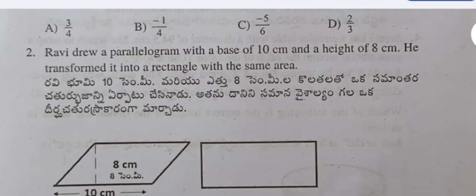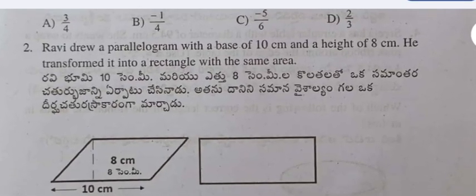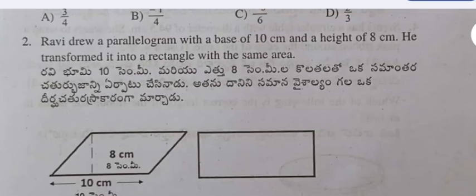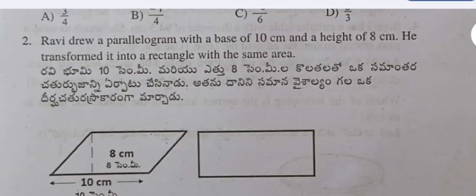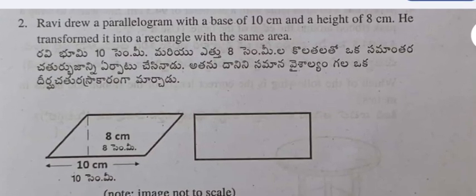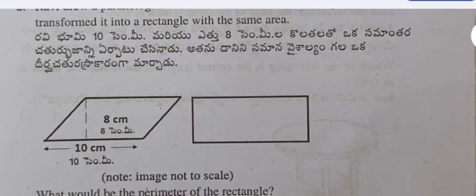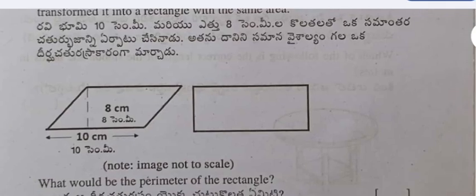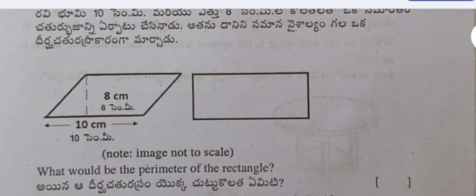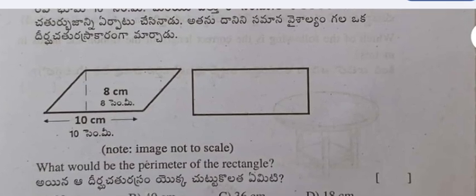Question 2: Ravi drew a parallelogram with a base of 10 centimeters and a height of 8 centimeters. He transformed it into a rectangle with the same area. What would be the perimeter of the rectangle?